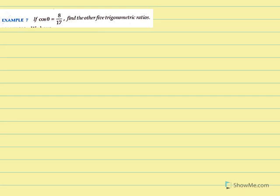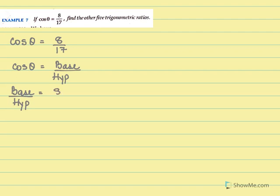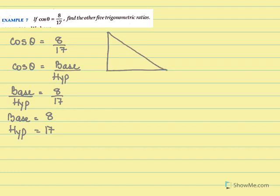If cos of theta is 8 over 17, find the other trigonometric ratios. Cos theta is 8 over 17. Cos theta is base over hypotenuse. So when I compare I get base over hypotenuse is 8 over 17, which means base equal to 8 and hypotenuse equal to 17. So I will draw a triangle based on that. I will take this angle as C.